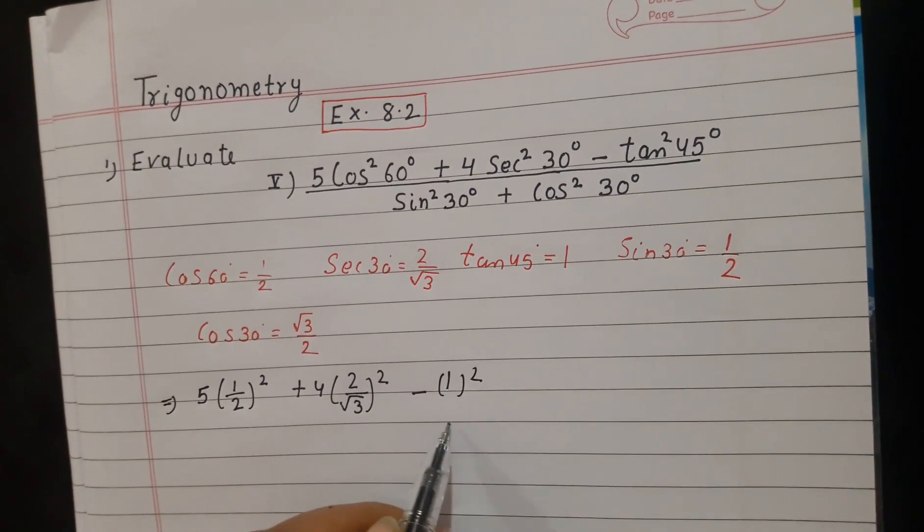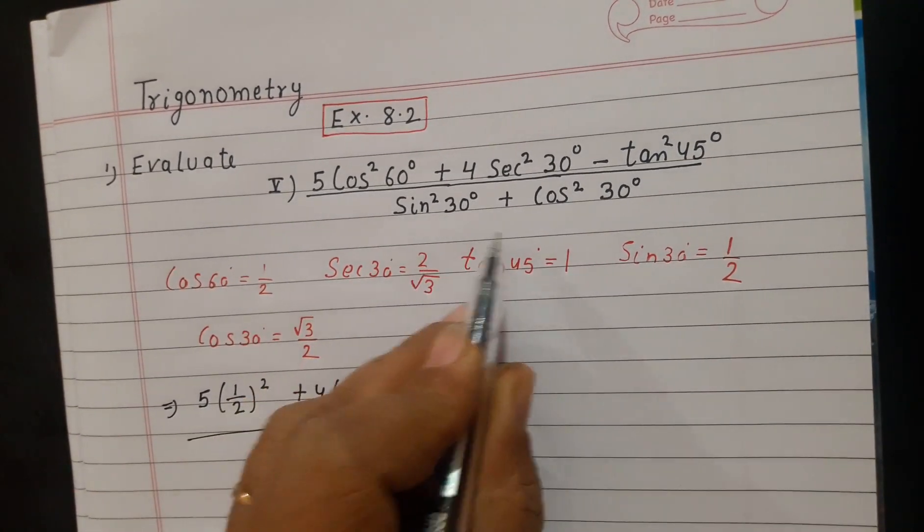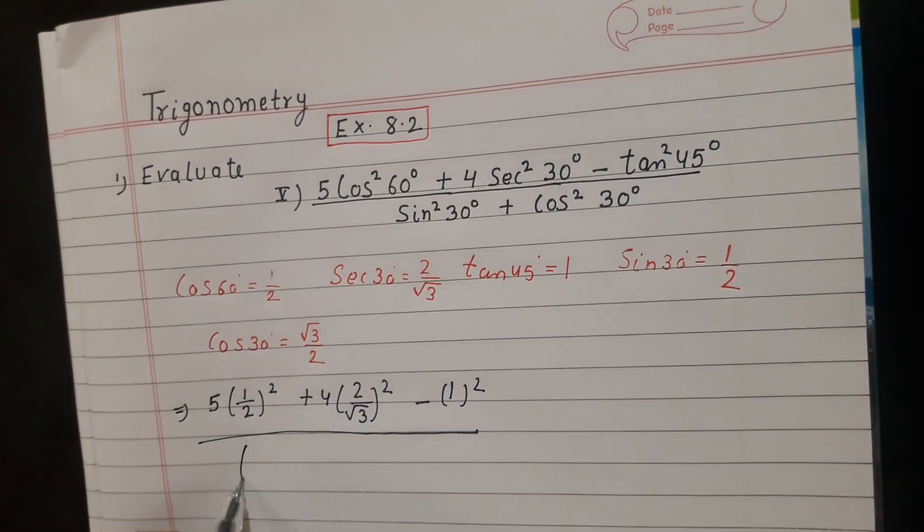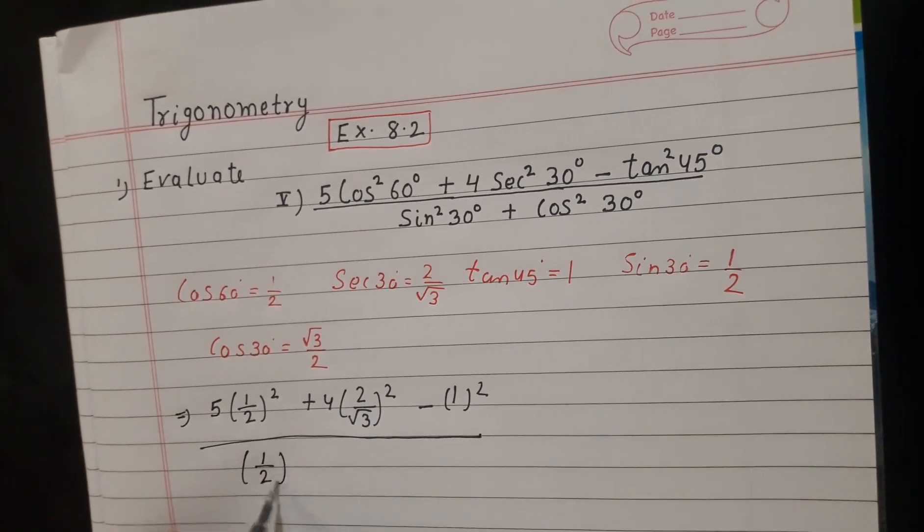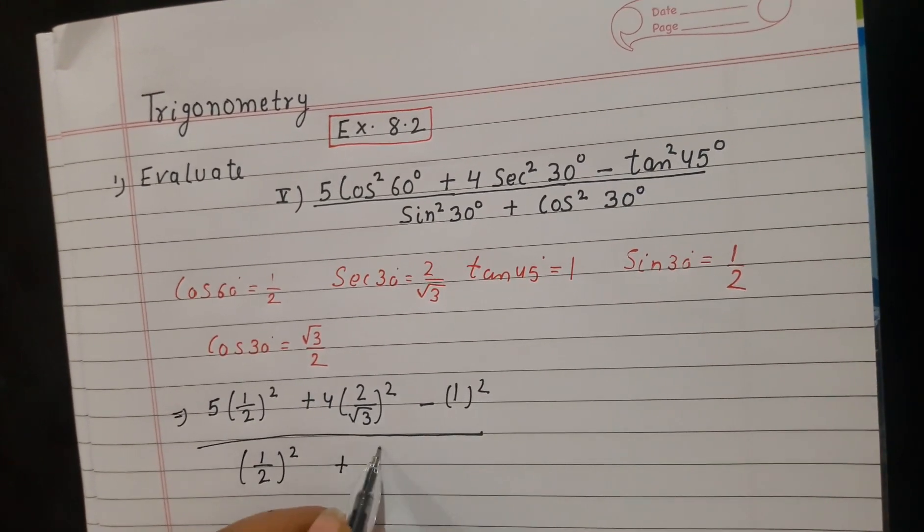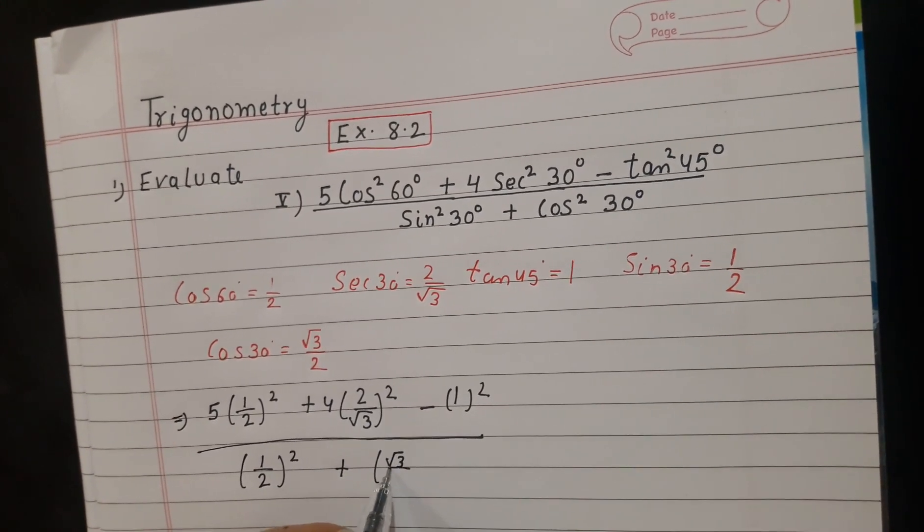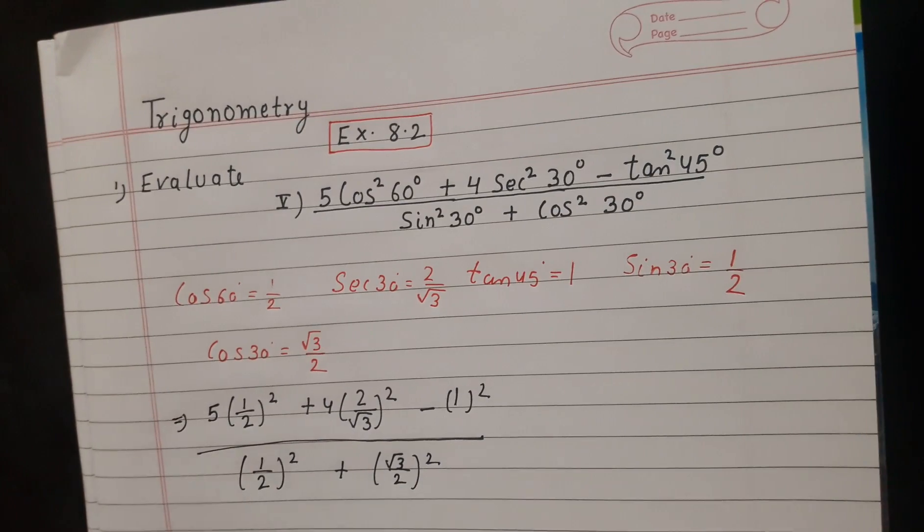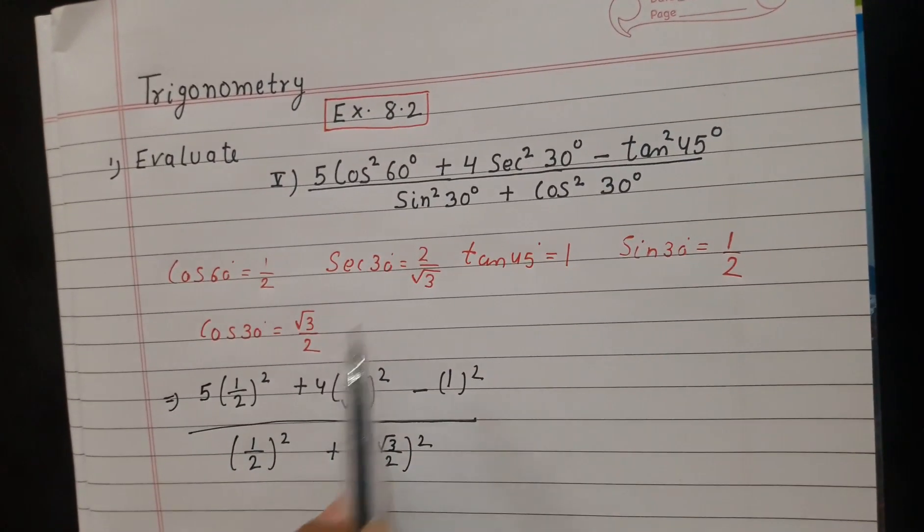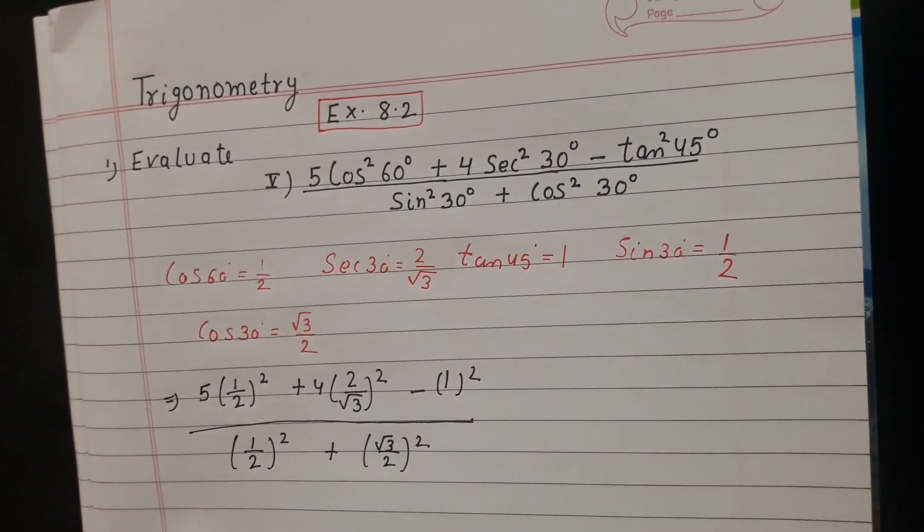Now we have to put all the values in the question and then solve it. sin 30 value is 1 by 2 whole square, cos 30 value is root 3 by 2 whole square.